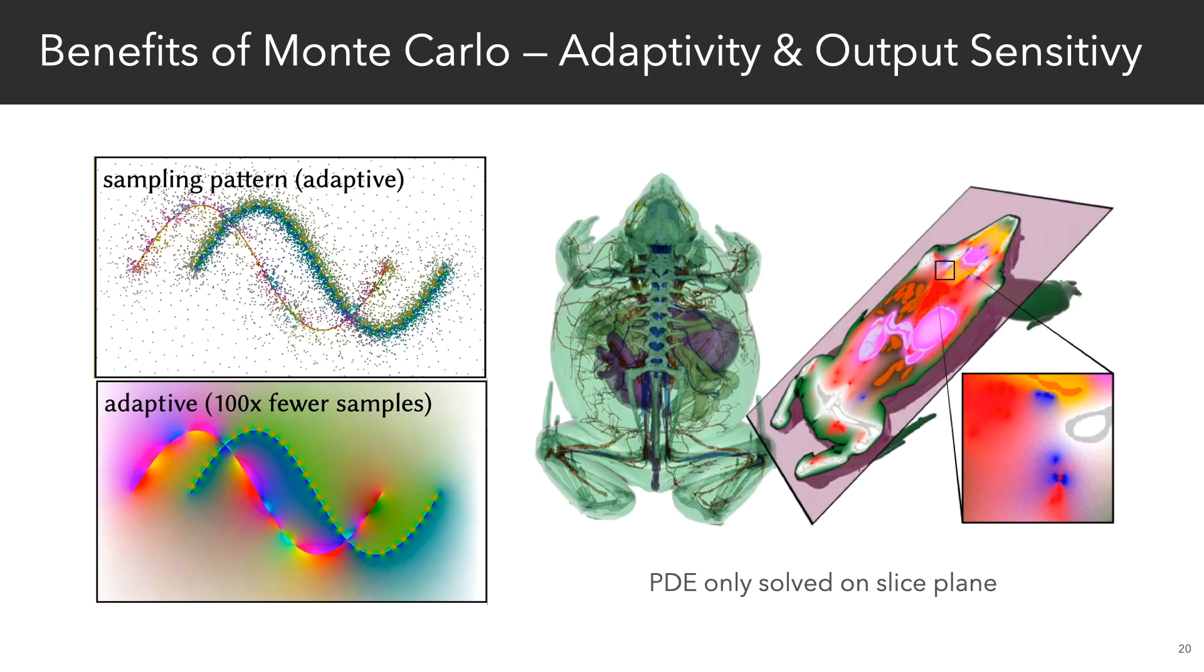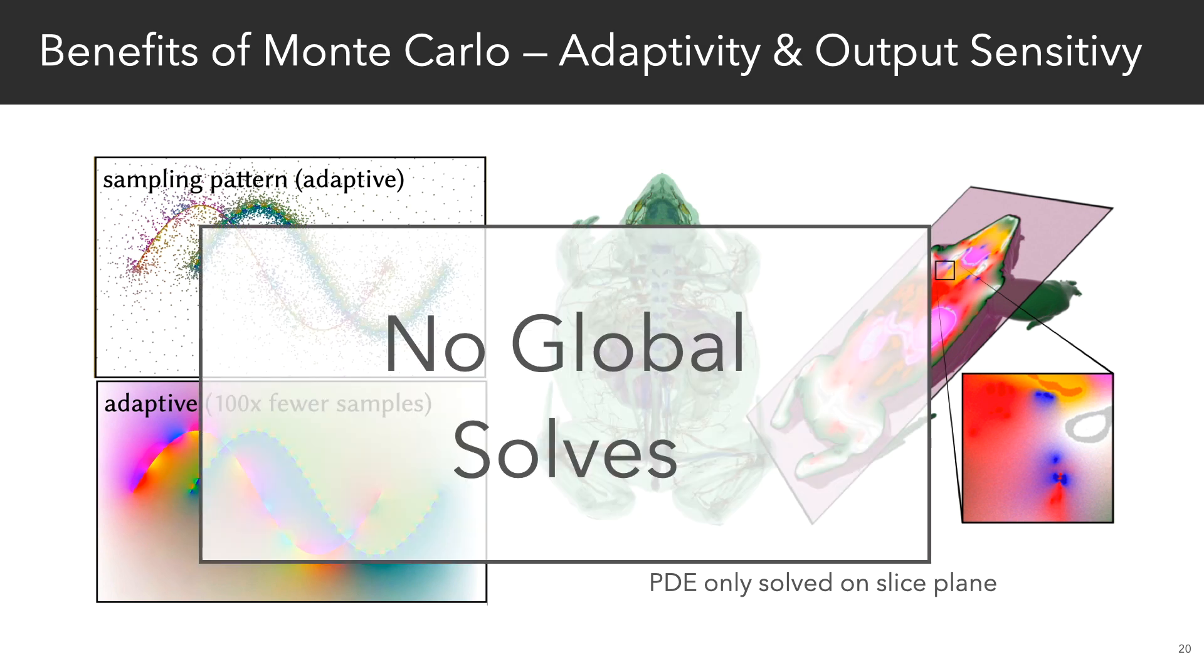We can also do adaptive sampling to concentrate sampling effort in regions with high frequency, or only in regions that we care about. And this is just like the difference between radiosity and ray tracing. Instead of computing a global system, just focus effort on what the camera sees.